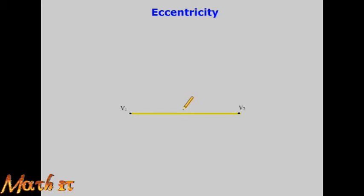Next, the midpoint between V1 and V2 is the center point. Now we are going to look at the circle. V1 to C is the radius — here, C is the center and the distance V1C is the radius.